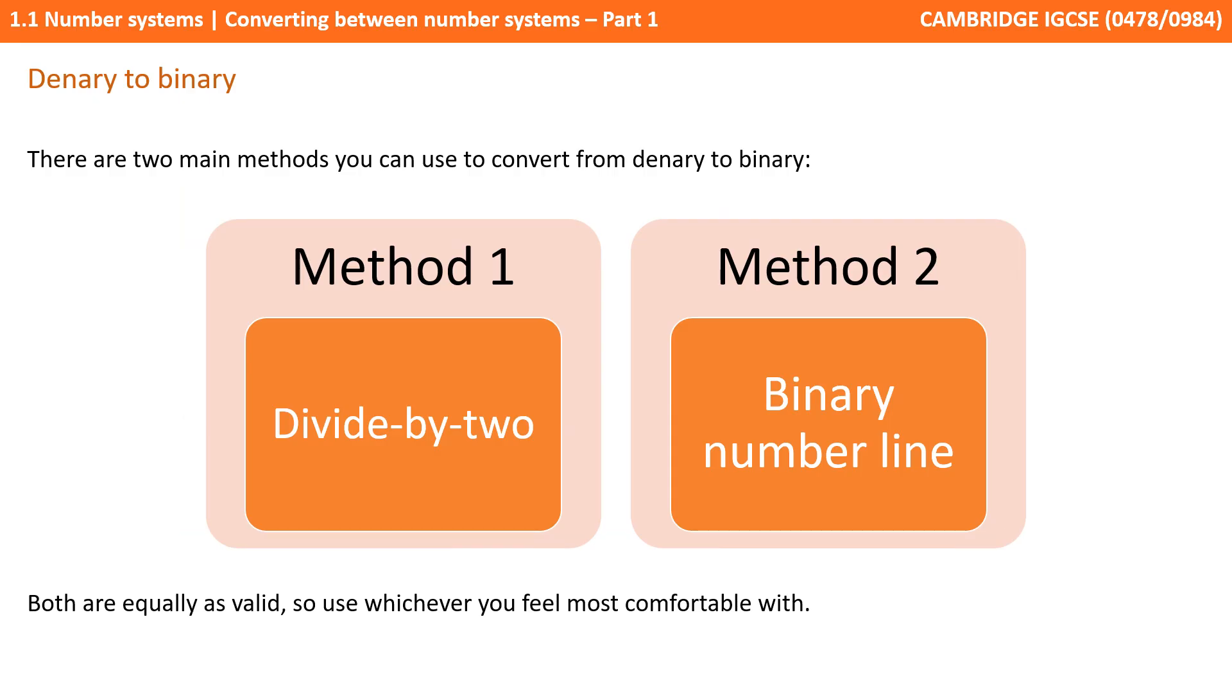So how do we convert from a denary number to a binary number? Well, there are two methods. Both are equally valid, and you just need to use the one you feel most comfortable with. There is the divide by 2 method, which makes use of modulus, the remainder of division by 2, and the binary number line method. Let's take a look at each method in turn.